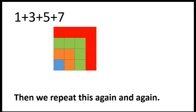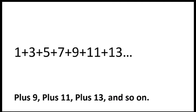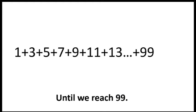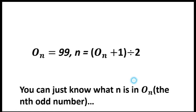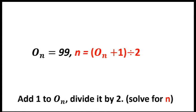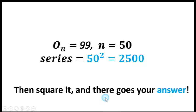Then we repeat this again and again: plus 9, plus 11, plus 13, and so on, until we reach 99. If you want to solve for the sum, you can just note what n is — the nth odd number — add 1 to it, divide it by 2, then square it, and there goes your answer.